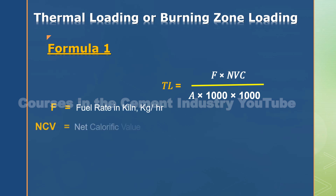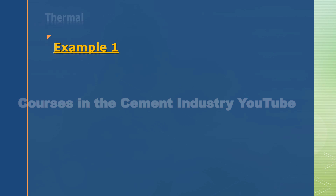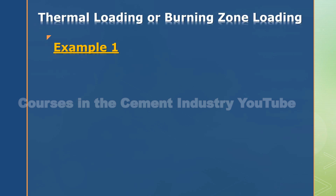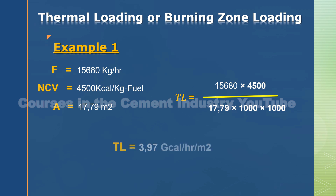Thermal loading or burning zone loading formula: TL equals — where F equals fuel rate in kiln, MCV equals net calorific value of fuel, and A equals burning zone cross-sectional area. Example 1: where F equals 15,680, MCV equals 4500, A equals 17.79. TL equals 3.97. The target equals 4 to 5.